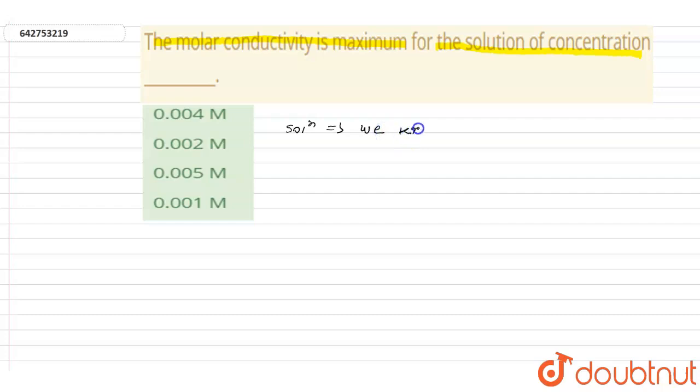We know the relation between molar conductivity and molarity. So here, lambda m is equal to k into 1000 upon m.